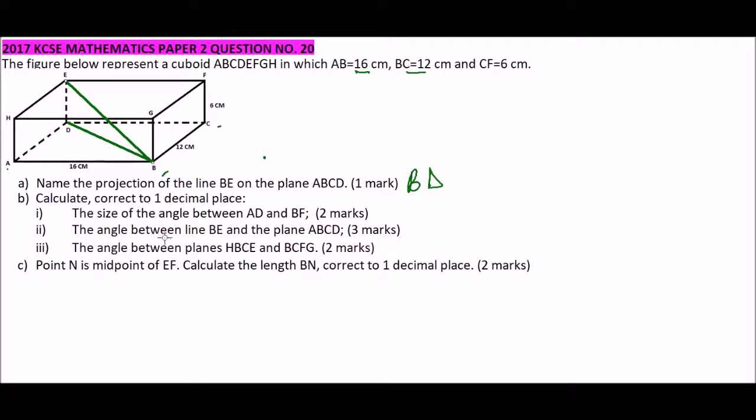The second question, calculate correct to one decimal place the size of angle between AD and BF. So this is our AD and our BF. So this is line BF. Because the two lines do not lie on the same plane, we translate AD so that it fits onto BC. And therefore we look for the angle between BF and BC. That is, we translate AD. So now the angle between, once you translate AD onto BC, the angle between AD and BF.